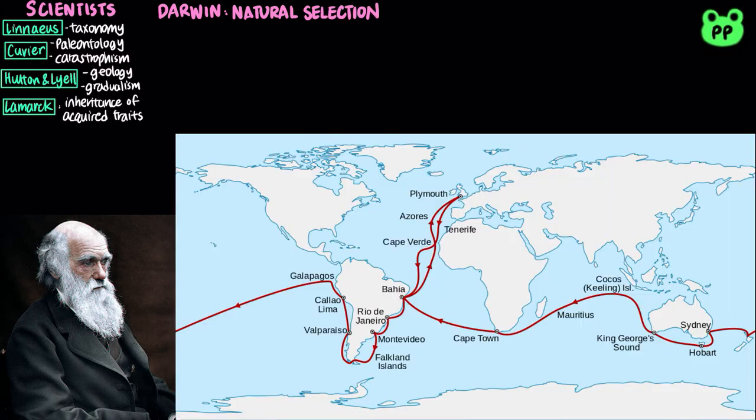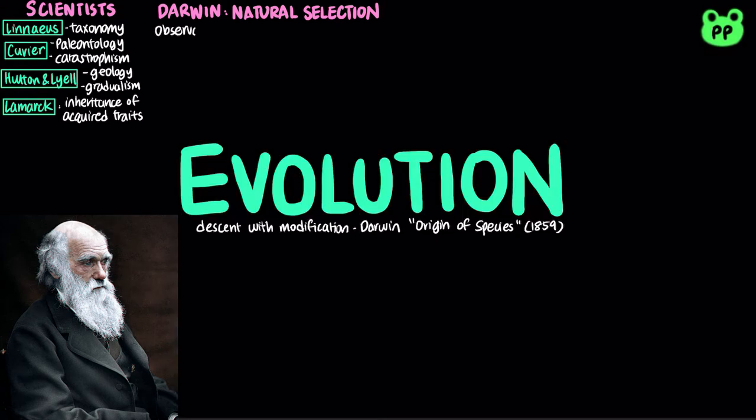During his travels on the Beagle, Darwin collected specimens of South American plants and animals. He was particularly interested in the geographic distribution of species at the Galapagos Islands. Darwin made several important observations.